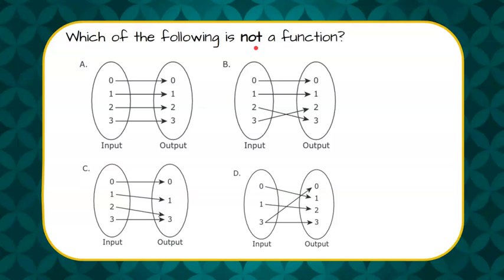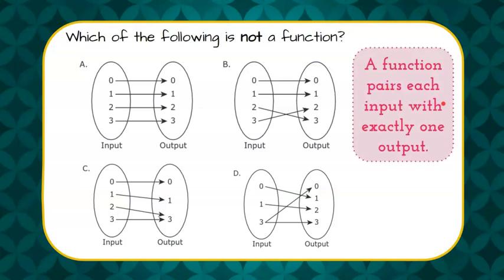So we need to review that a function pairs each input with exactly one output. We're looking at the inputs of each of these mapping diagrams to determine which is not a function. We have four different inputs, and each one pairs to exactly one output. So this is a function.